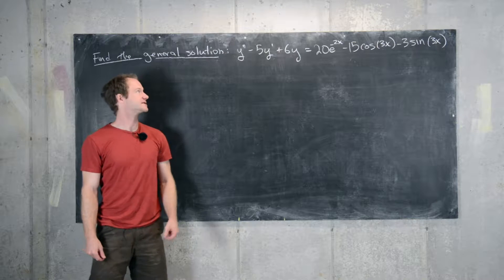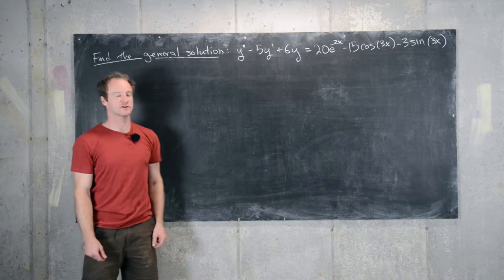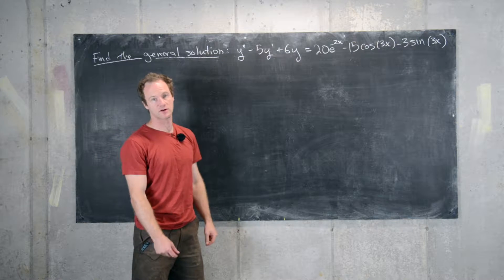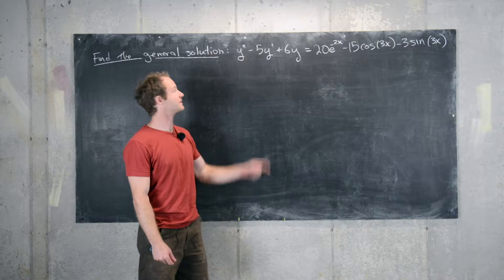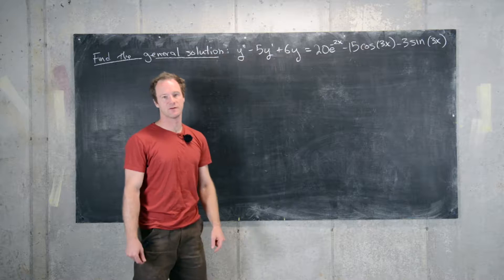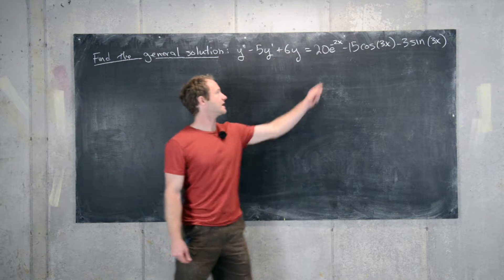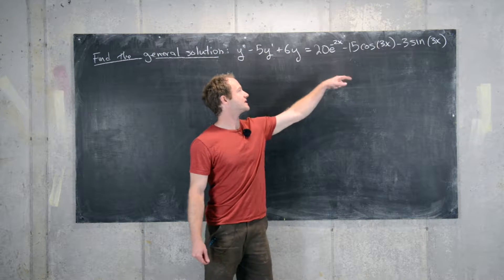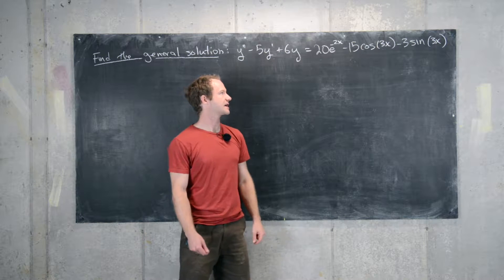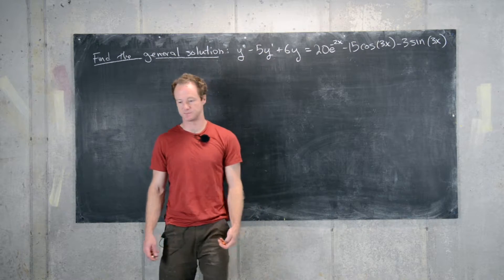In this video we want to look at the following example. We want to find the general solution to this non-homogeneous linear differential equation, that's second order. So we have y double prime minus 5y prime plus 6y equals 20 e to the minus 2x minus 15 cosine 3x minus 3 sine 3x.